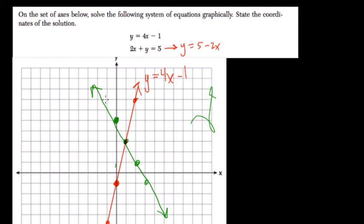They cross right here. So label this one 2x plus y equals 5. Or you could label it the way we wrote it. And the answer is right here, 1, 3. These two lines cross at 1, 3.